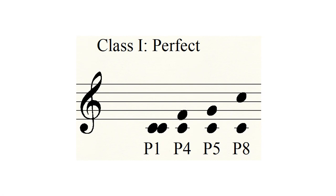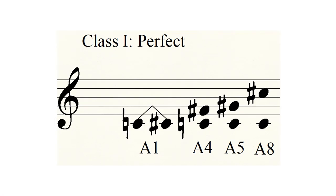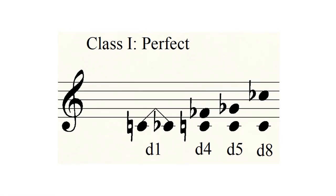To make this kind of interval larger—in other words, to sharpen the goal pitch—is to augment it, which is notated with a capital A before the interval number. So a C to a C sharp on the same line is called an augmented unison or capital A1. C to G sharp is an augmented fifth. To flatten the goal pitch of a perfect interval is to diminish the interval, notated with a lowercase d. C to F flat is a diminished fourth. C to C flat an octave higher is a diminished octave.